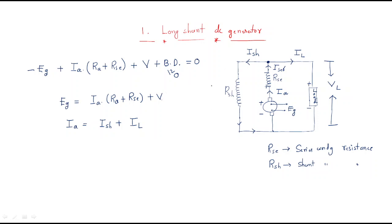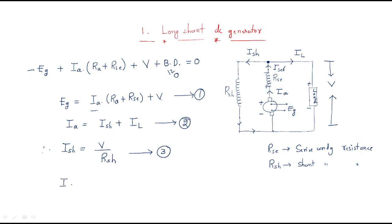The shunt current Ish equals the load voltage V divided by the shunt resistance Rsh, because the voltage across the shunt winding is the load voltage. The armature current Ia can also be expressed as: Ia equals (Eg minus V) divided by (armature resistance plus series resistance), when brush drop is neglected. These are all the formulas related to the long shunt DC generator.